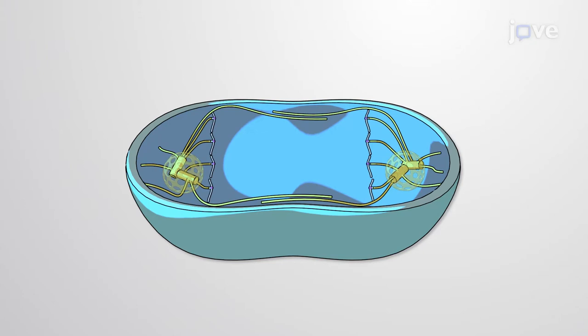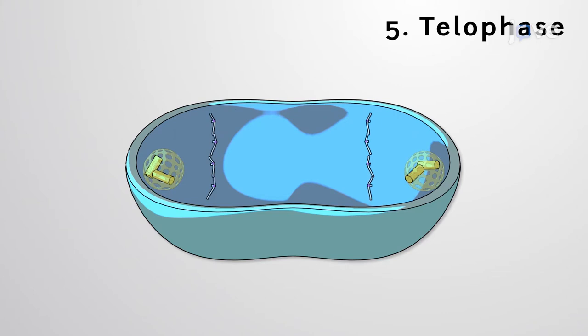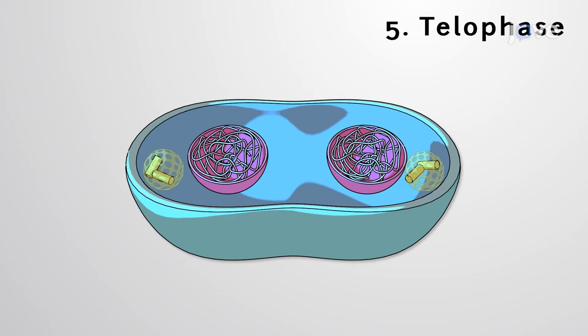Finally, the chromosomes land at opposite cell sides during telophase, whereupon the spindle apparatus disbands. The genetic material loosens, and two nuclear envelopes, one around each chromosome set, arise.